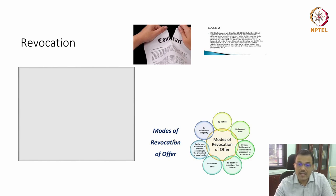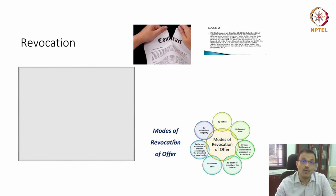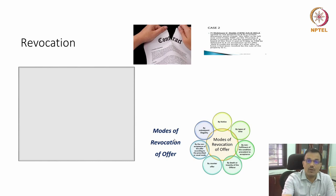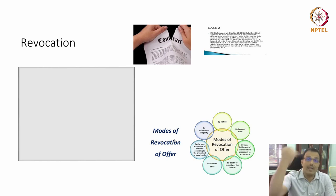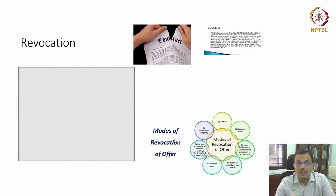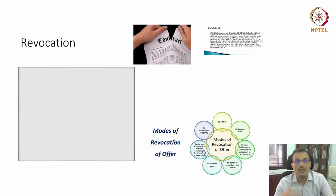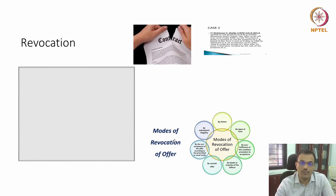Another way in which an offer expires is by what we call a counteroffer. I make an offer; instead of accepting, you put something else and send it back to me — that is a counteroffer. So the original offer is gone; the counteroffer now exists on the table, and it is for me to accept or reject. That is what a counteroffer is.